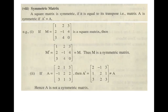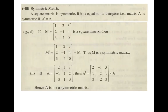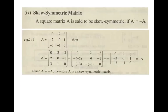Now we come to the skew-symmetric matrix. In the symmetric matrix, A^T equals A. In the skew-symmetric matrix it is a little different: A^T equals minus A. The definition is: a square matrix is said to be skew-symmetric if A^T is equal to minus A.